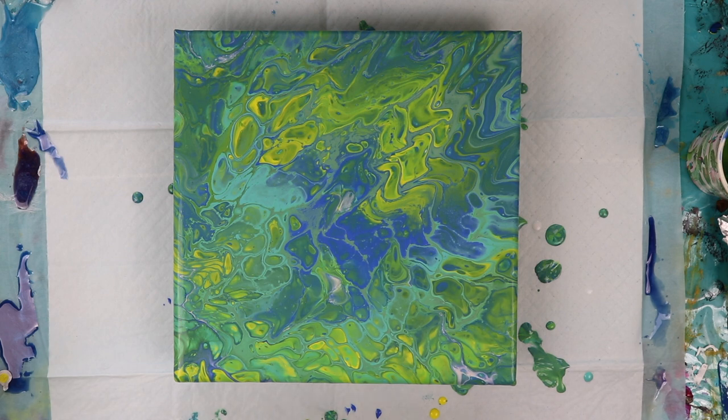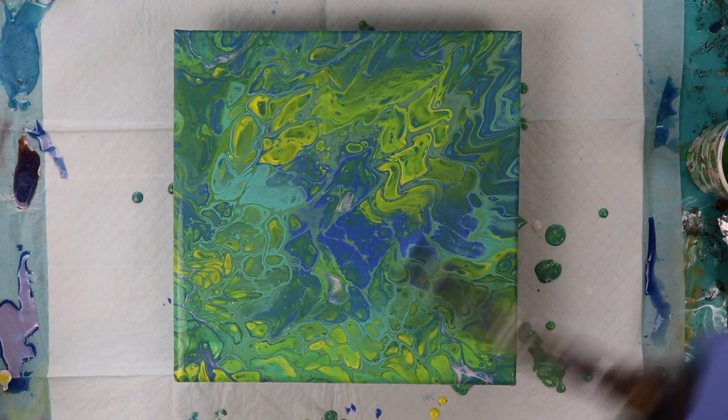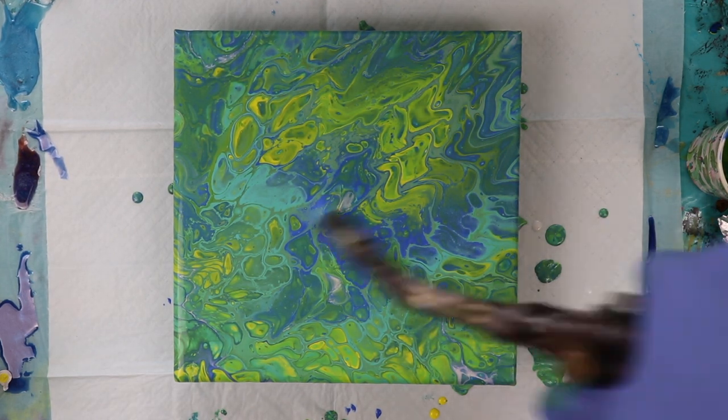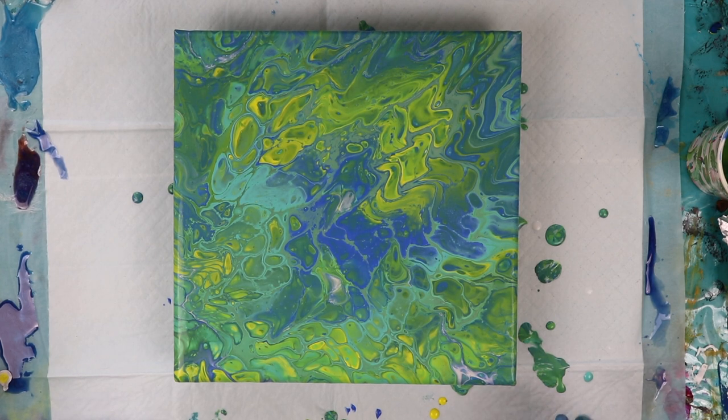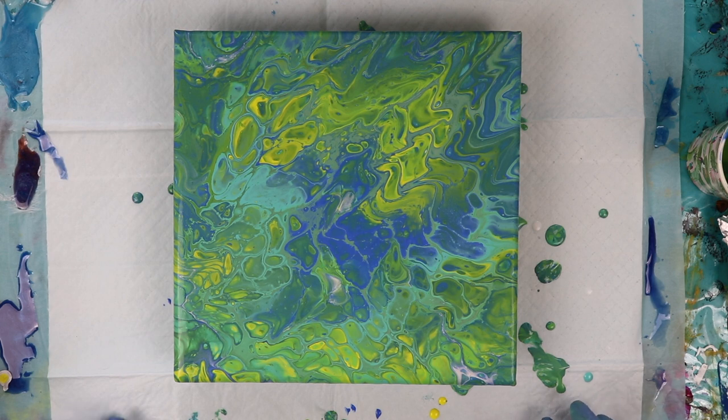Now I'm going to torch it again to see if any other cells develop and to make sure all of the air bubbles are popped. Okay, there we have it. Our sea colored paint pour. Stay tuned for close-ups on this and I'd like to thank you for watching.